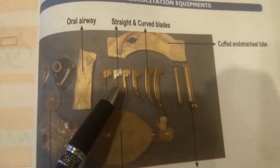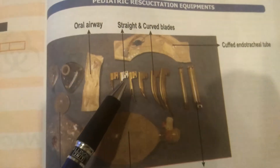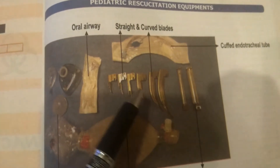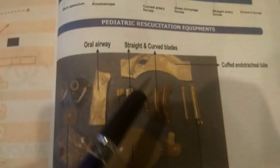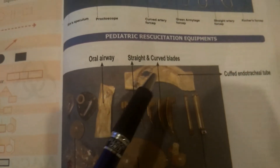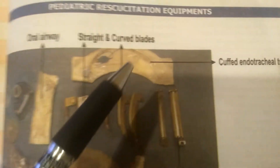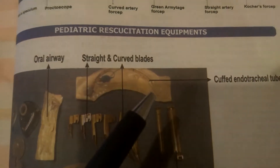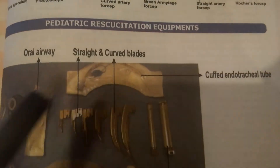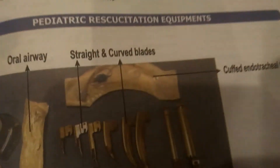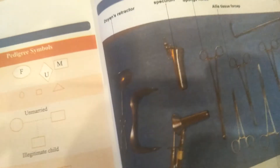Straight blades are sometimes used in children, curved blades for larger patients. See this tube — this is a cuffed endotracheal tube. This is a cuffed endotracheal tube. We are using this in surgery. Now another instrument — this is known as Doyen's retractor.